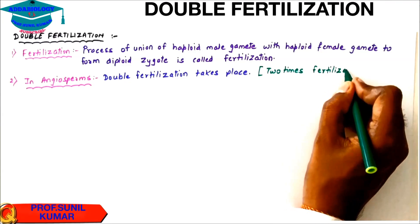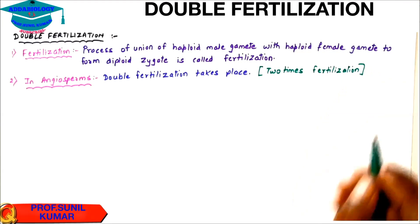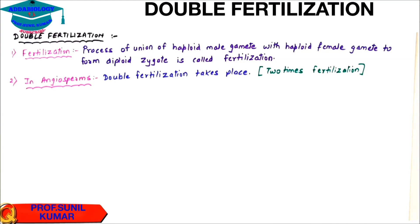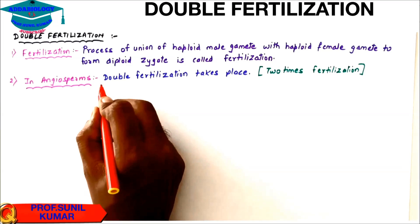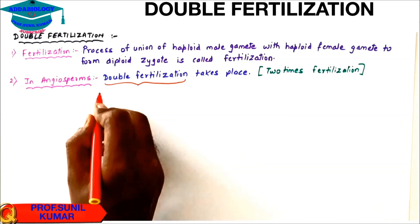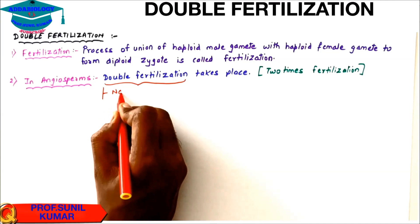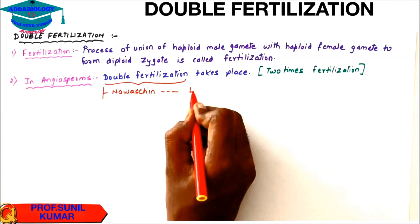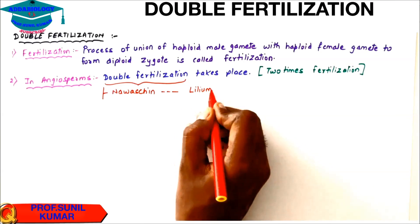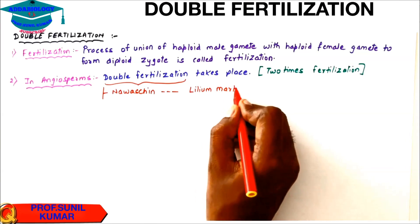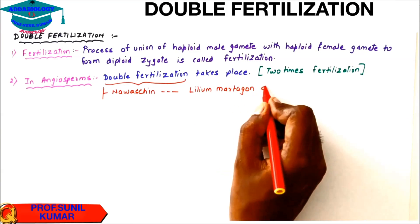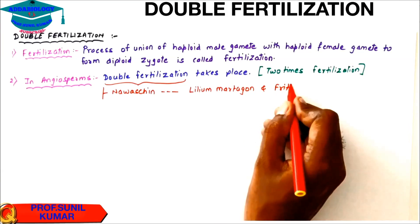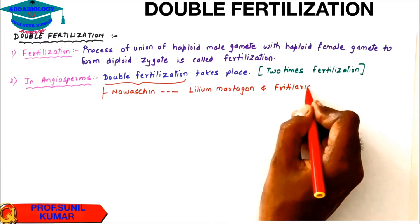When we talk about double fertilization, for your exams you need to understand there was a scientist by the name of Navas Chen who studied double fertilization in Lilium martagon and Fritillaria plant.